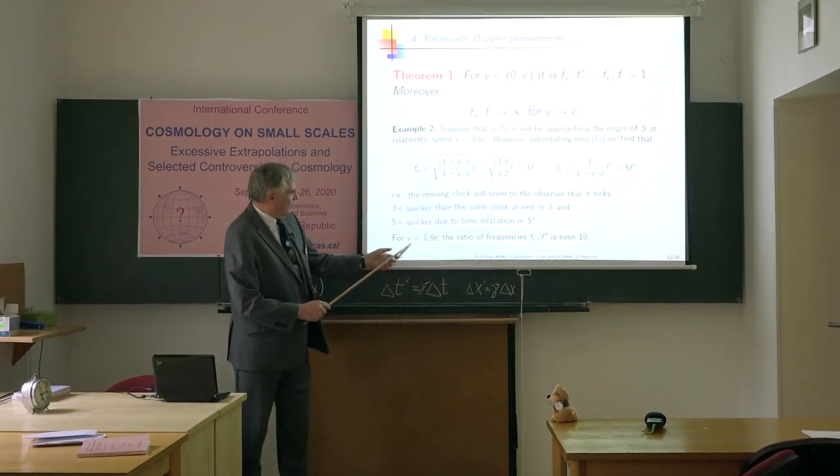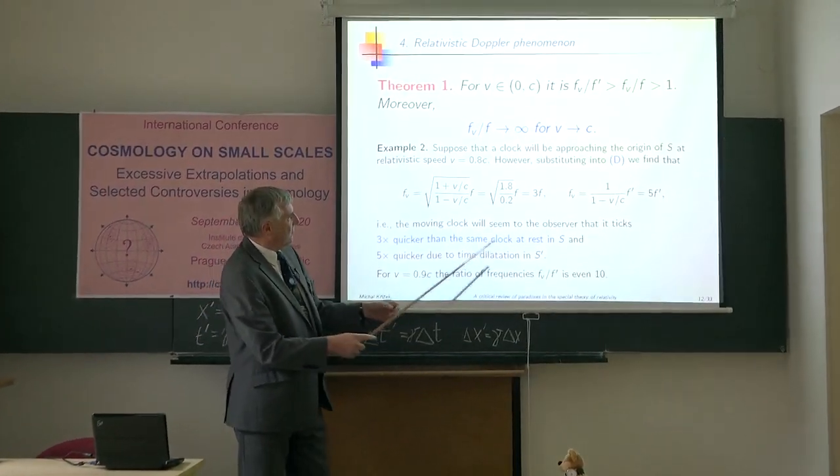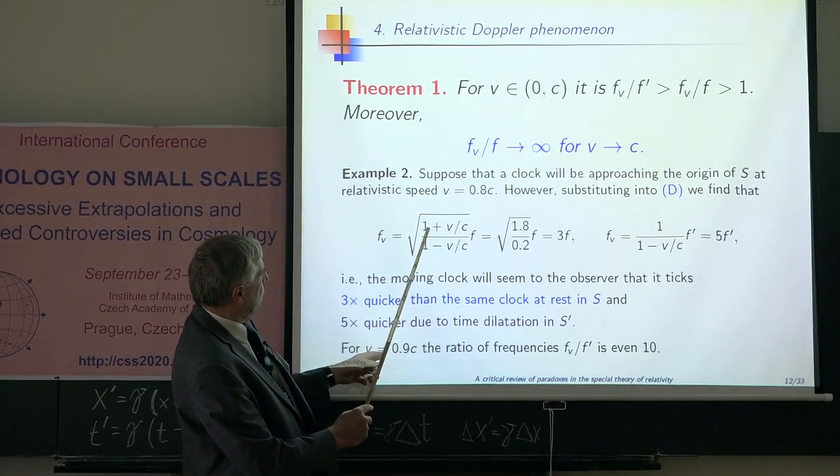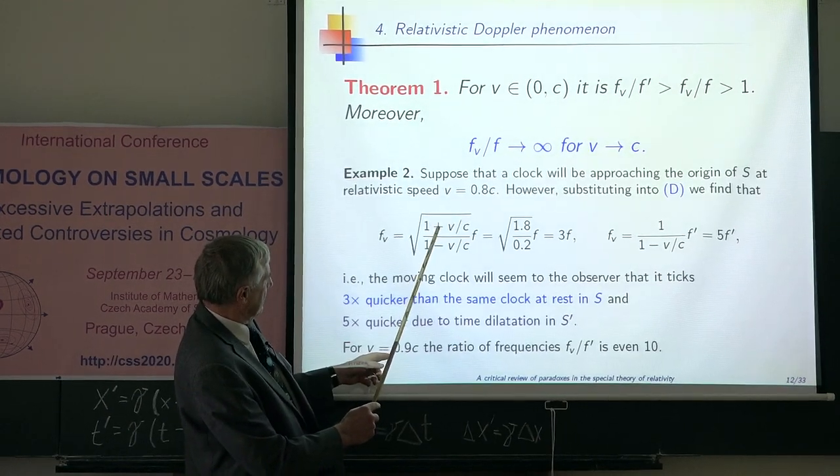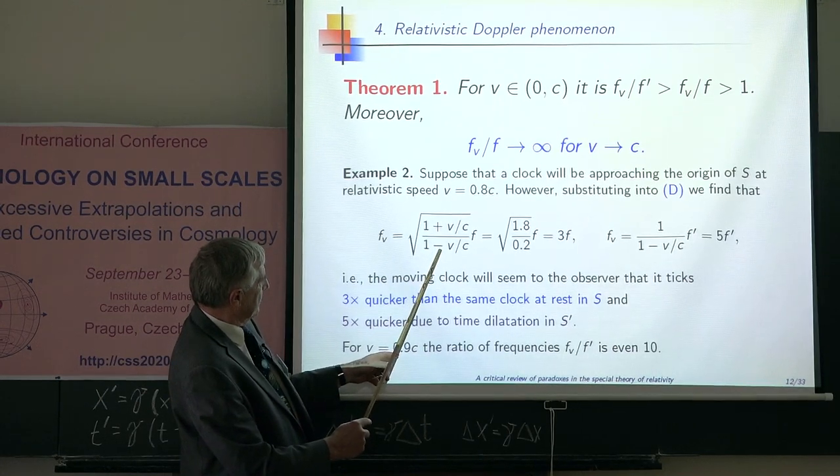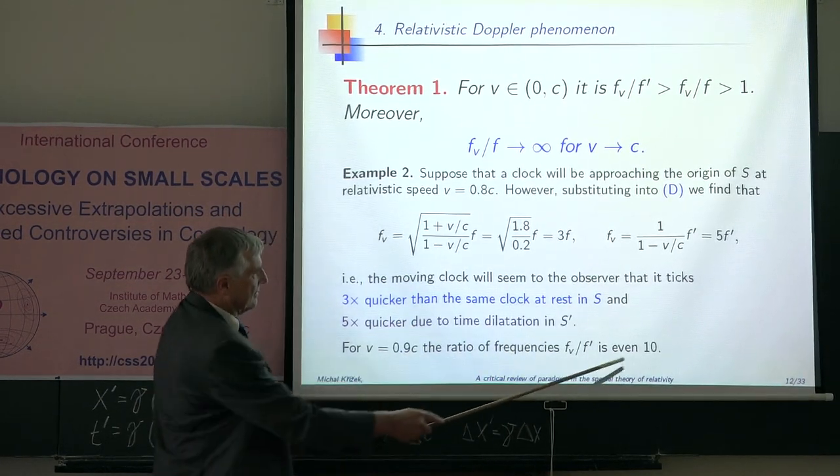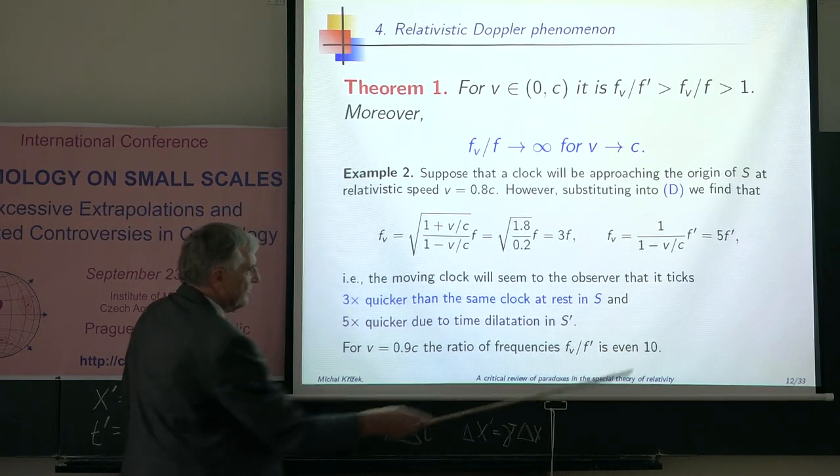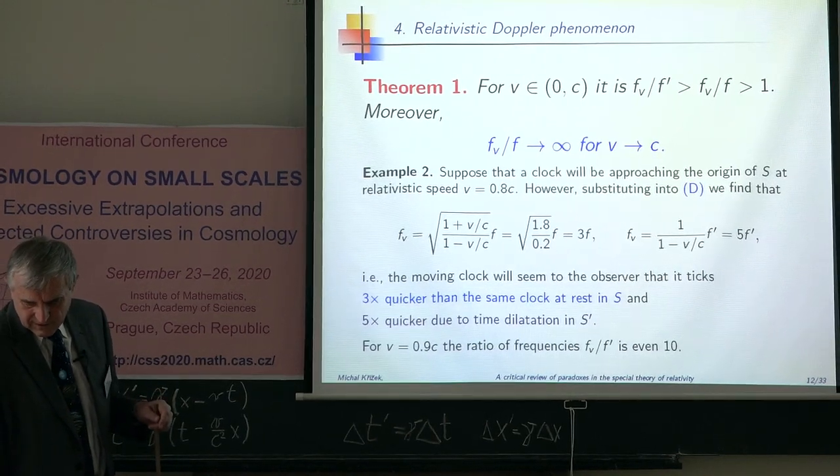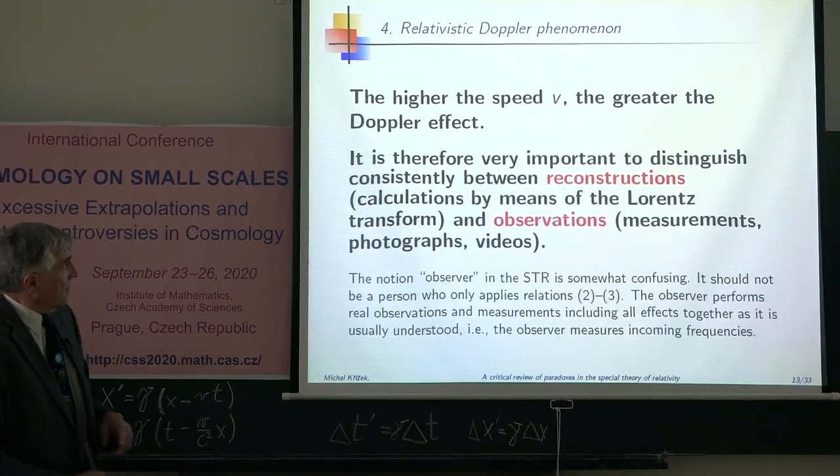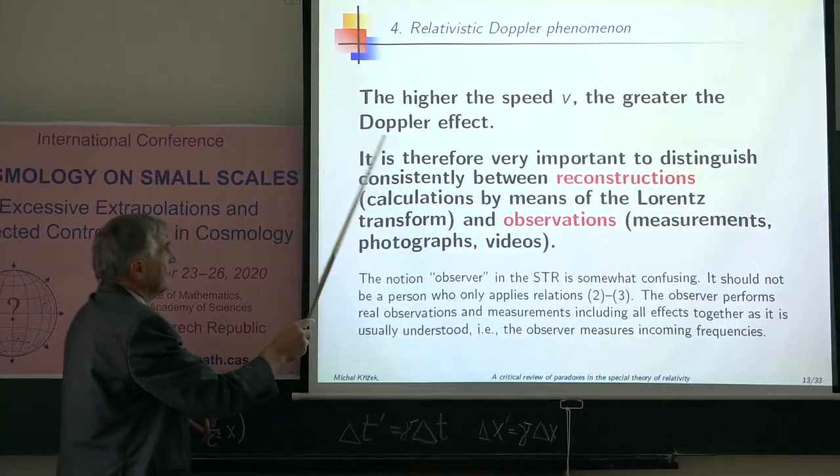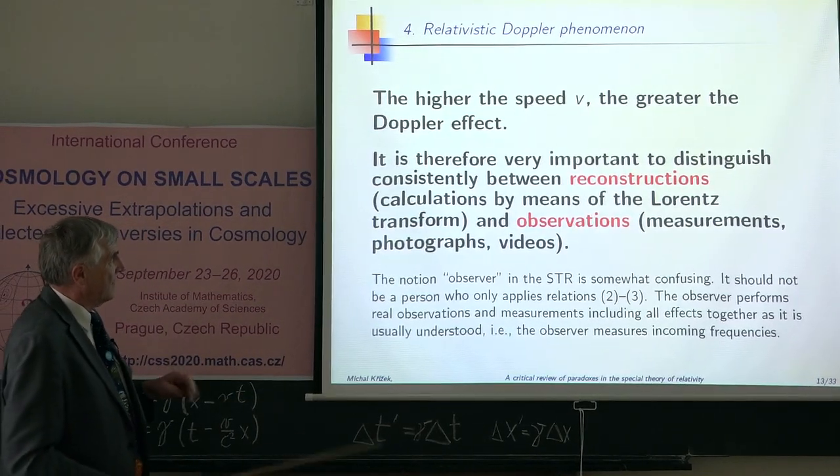If you substitute here v equal to 90% of speed of light, then you get here 1 plus 9 divided by 0.1. You get that this ratio between these two frequencies is even 10. He will see 10 times quicker clock. The higher the speed v, the greater is the Doppler effect.